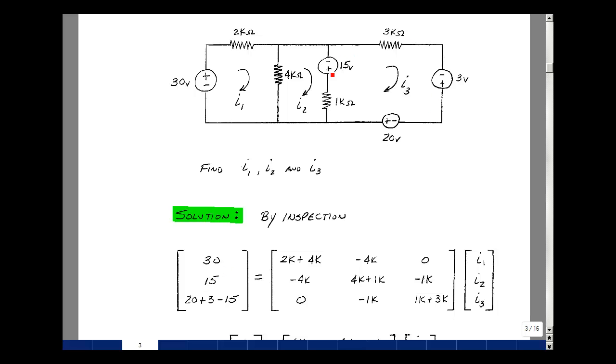Go around mesh number 3, add up all the resistances, and that's going to go in row 3, column 3. So 1k plus 3k. Between meshes 3 and 1, I have a 1k resistor, so minus 1k. Nothing between 3 and 1, so I've got a 0 here. Of course, our matrix is symmetric. What's in row 1, column 2 is also in row 2, column 1. Row 1, column 3 equals row 3, column 1. Row 2, column 3 equals row 3, column 2.